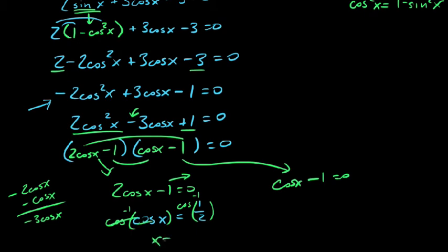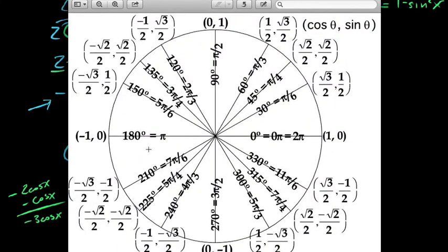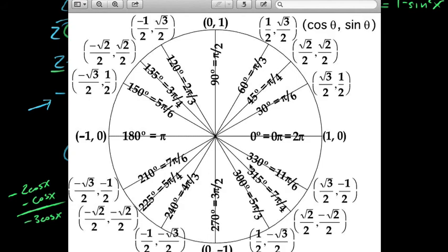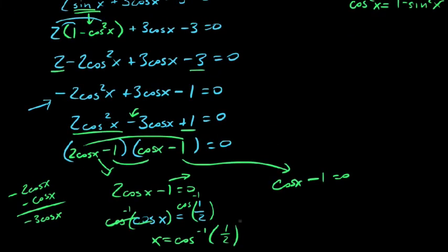What angles would give us a cosine of a half? Let's look at our unit circle. Cosine of a half would be positive x values of a half, so we'd say at π/3, and it looks like down here at 5π/3.